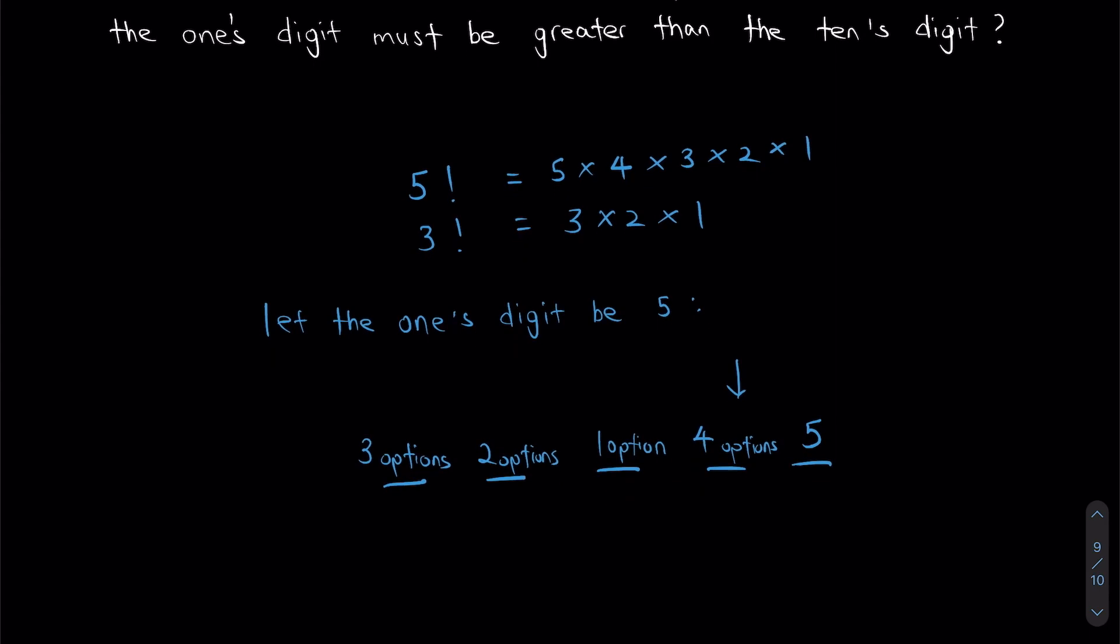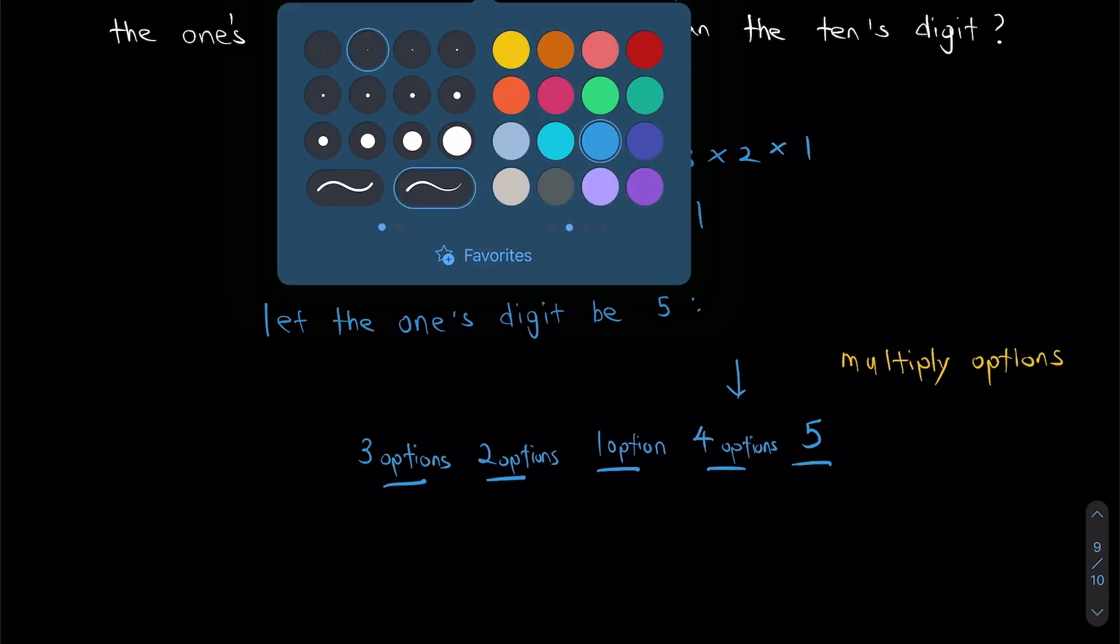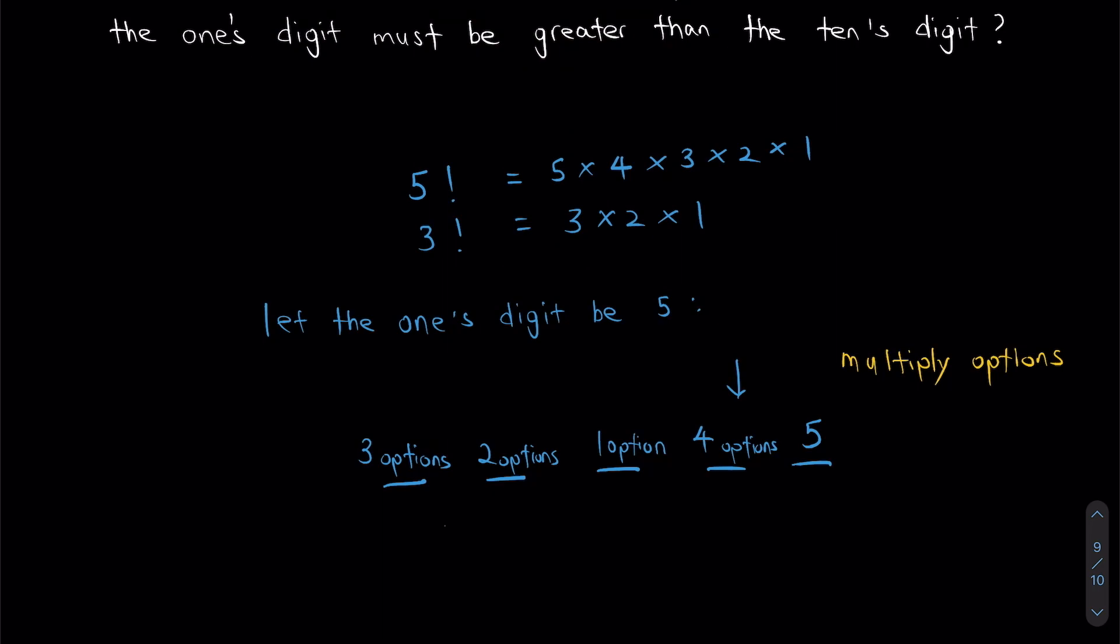So to calculate how many numbers I can get if I let my ones digit be five, I multiply all the options. This is something very important: multiply options. That's what we're going to be doing for the rest of the question as well, which means for this part we'll be multiplying 4 × 3 × 2 × 1, which is basically 4 factorial.